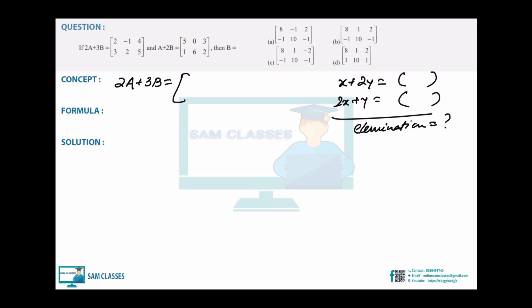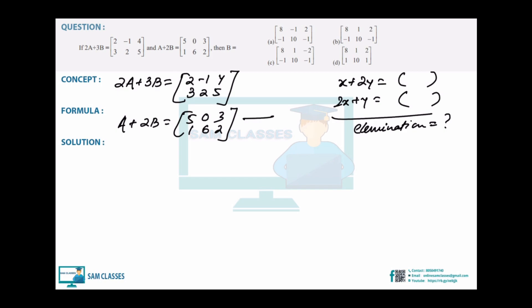We have 2A + 3B = [[2,-1],[4,3],[2,5]] and the other equation is A + 2B = [[5,0],[3,1],[6,2]]. I want to eliminate A because I want to find B. Try to eliminate the variable they haven't asked for.